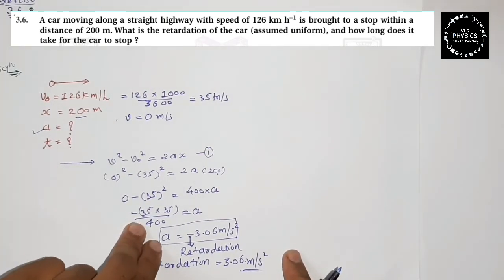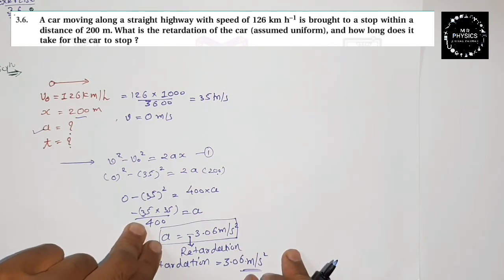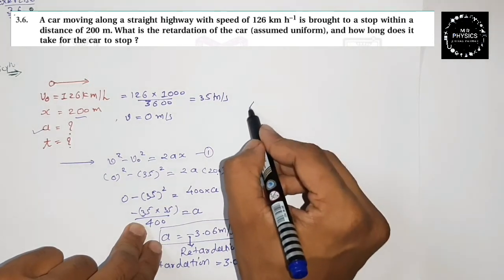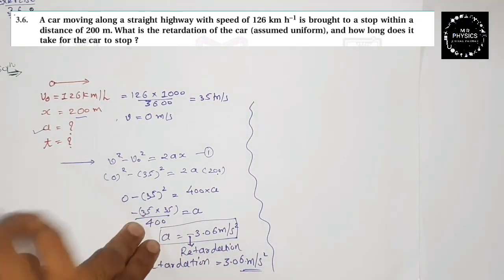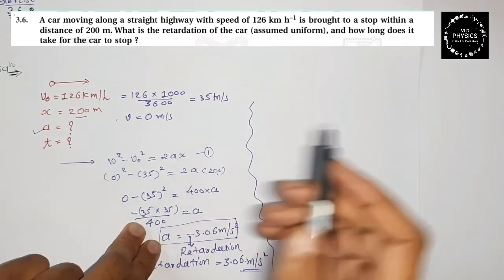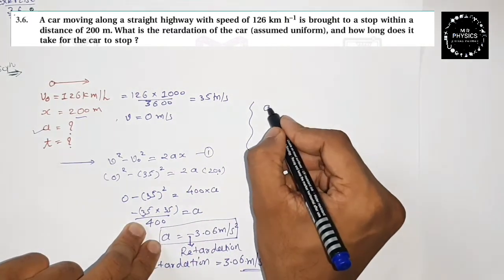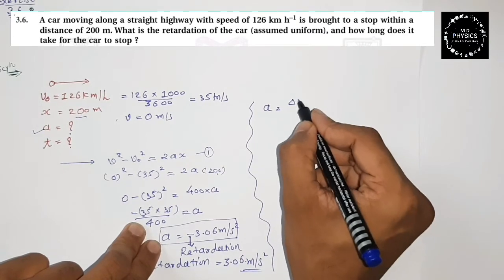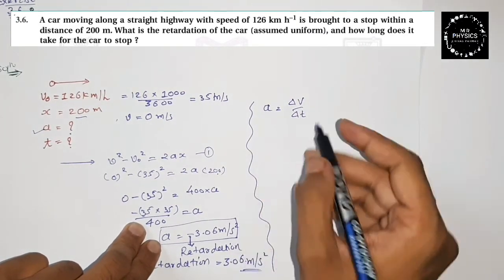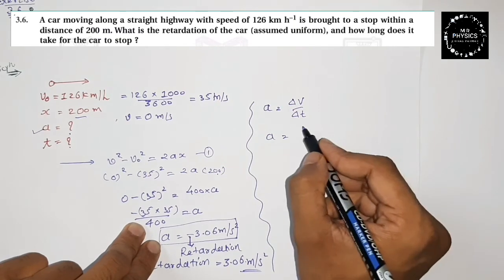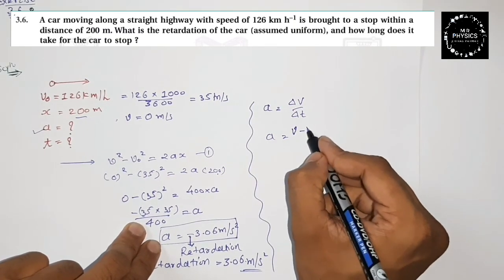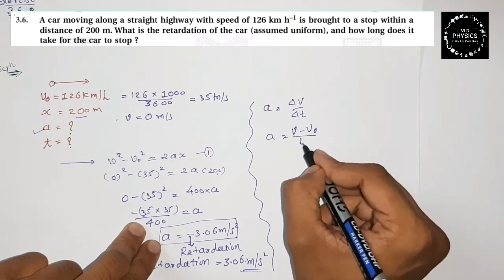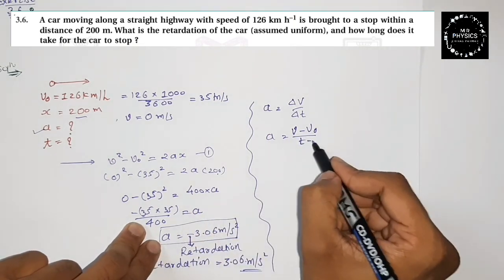Now they are asking us to find the time — how much time does it take? We know the acceleration formula: a equals delta v divided by delta t. We can write this as: a equals (v − v₀) divided by t, where initial time is zero. So to find t, we rearrange to get t equals (v minus v₀) divided by a.